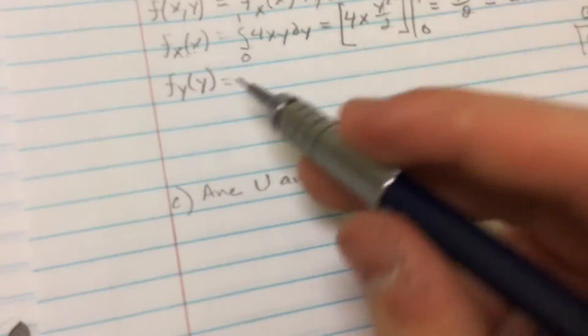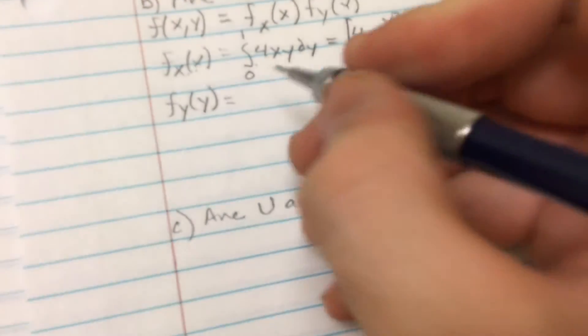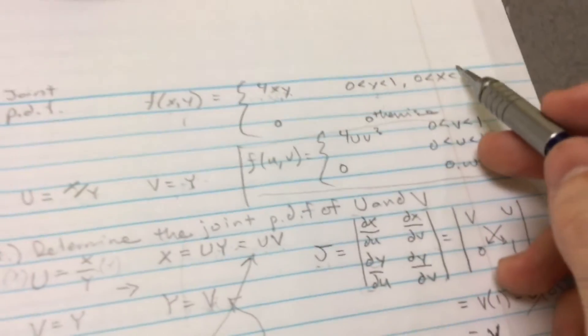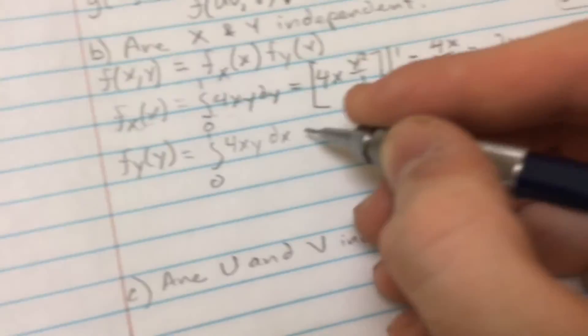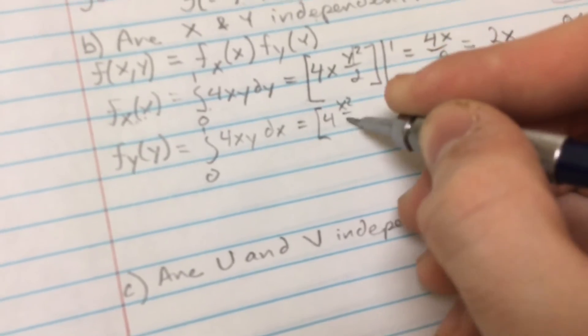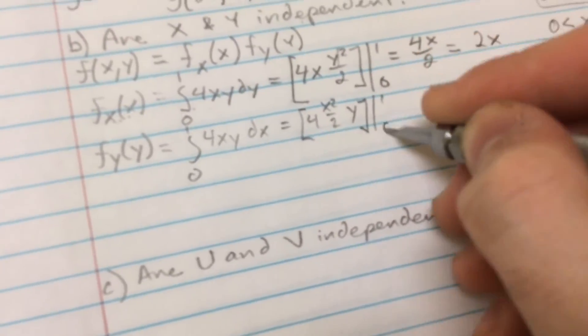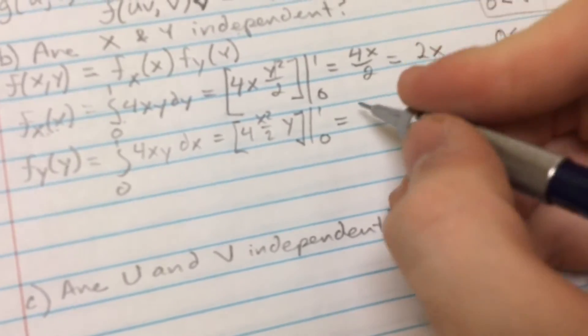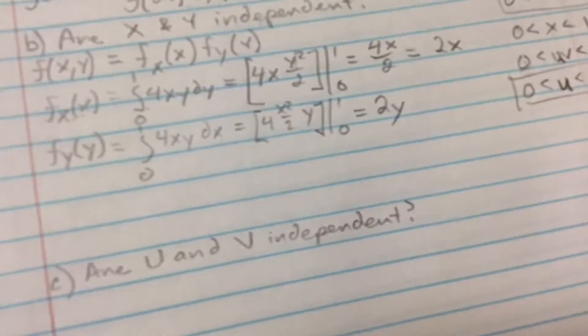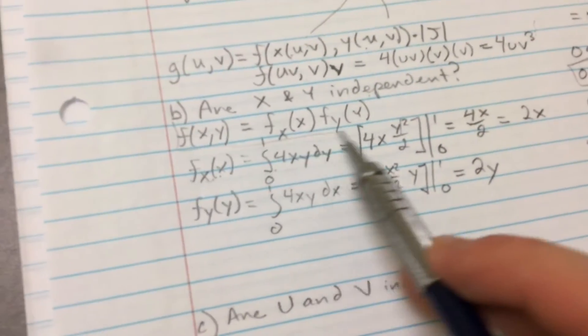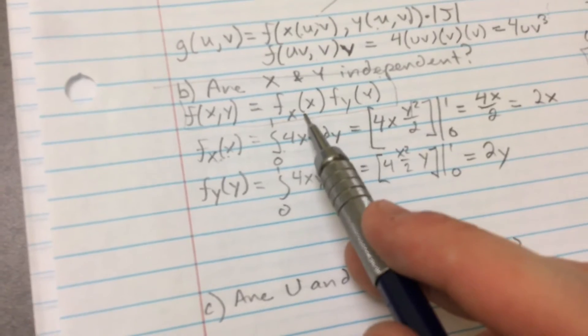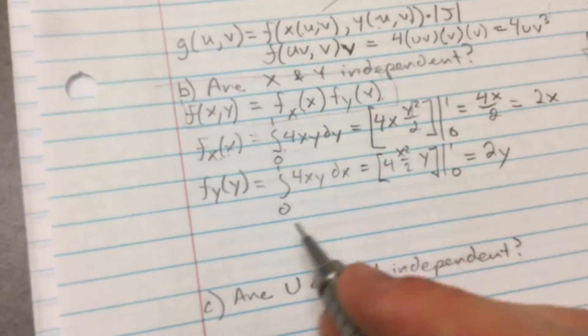Now we're going to do the marginal of Y. It's 0 and 1 because X is in the region 0, 1. And once again, with respect to X, it'll be 2Y. And so now what we want to do is we want to remember this right here. And we want to determine independency. We found this and we found that.